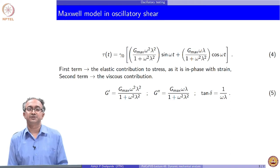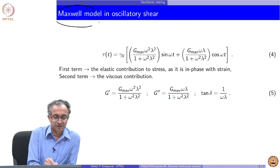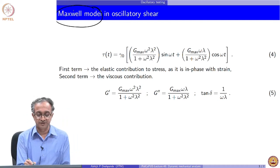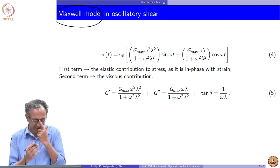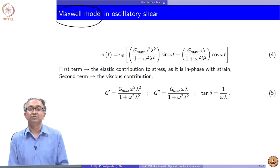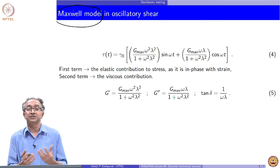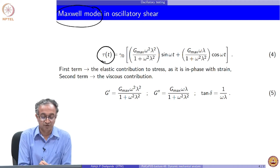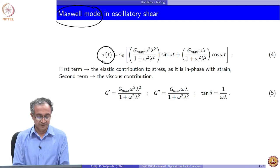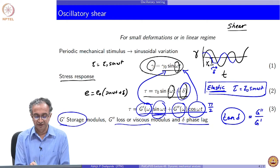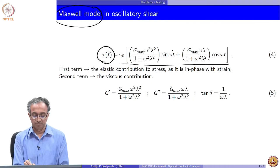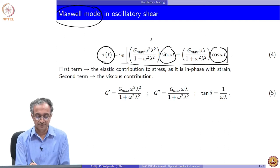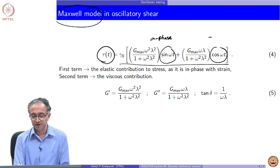Let us look at the oscillatory response of the Maxwell model. Given that stress relaxation gives an exponential decay depending on the relaxation time lambda, the material is predominantly viscous or elastic based on that time scale. Similarly here, depending on the value of omega lambda, we will see more or less elastic contributions. Solving the Maxwell model ODE with applied strain gamma naught sin(ωt), the solution is a time series with both sine and cosine parts—one in phase with the input strain and one 90 degrees out of phase.